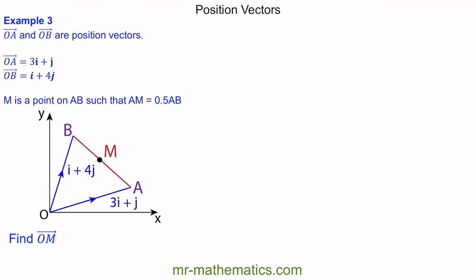For question 3, we've been told that OA and OB are position vectors where OA is 3i plus j and OB is i plus 4j. M is a point on AB such that AM is half of AB, so M is situated halfway along this line. We've been asked to work out the vector OM. You can pause the video, and when you come back we'll go through the worked solution.